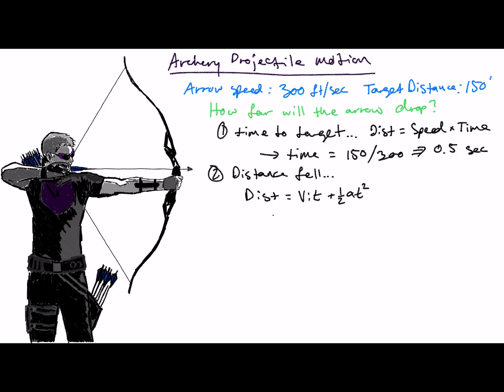We then apply our second equation of constant acceleration to the vertical component of motion, which situationally translates to drop distance equal to 0 plus 1/2 times negative 32.2, which is gravity in feet per second per second, times 0.5 squared. Note that initial velocity is 0 here because our release angle is 0 degrees.